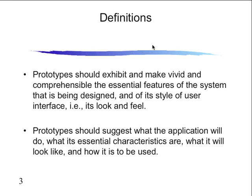Definitions. A prototype should exhibit something — make something visible or comprehensible about your product, about your software. You're building a prototype for something that doesn't exist yet, so you might be able to use it to show the features. It should show something essential about the program, usually the user interface, some algorithm, or some development — maybe the look and feel. It does not have to be functional.